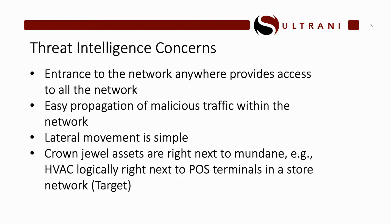That congestion issue is not really a threat intelligence concern, but it's worth bringing up. More importantly, when we deal with a client that has a flat network, we immediately know that anywhere on that network I can get in, or anywhere data can go out, provides access to everything on the network. So an attacker who can get on a printer, a TV, a server, anywhere — through a web app running inside the network — anything connected on this flat network provides access to everything else. That allows for seriously simple, easy propagation of malicious traffic.